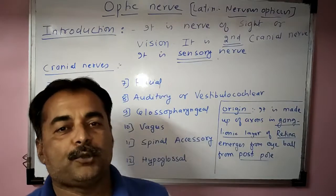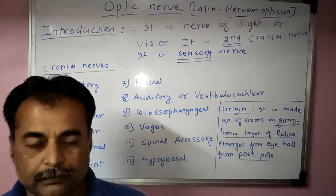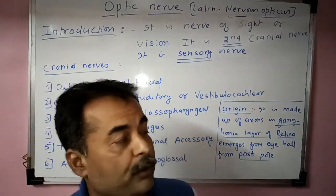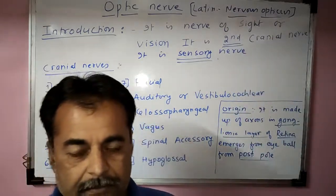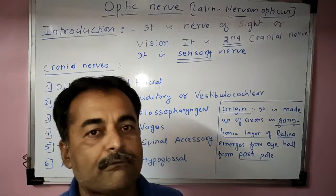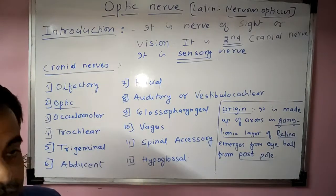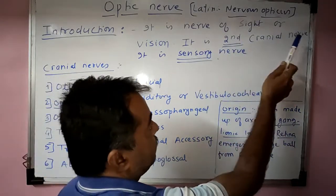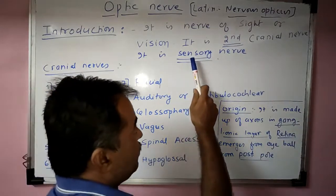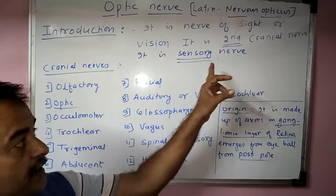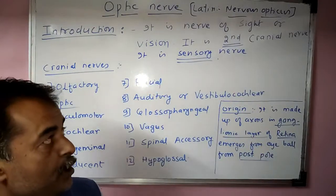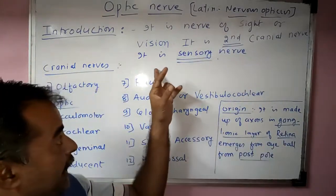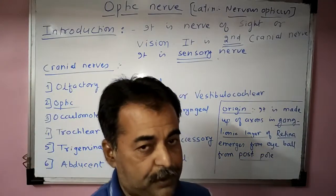Hello everyone, our today's topic is Optic Nerve. In Latin it is also called as Nervus Opticus. This optic nerve is a nerve of sight or vision. It is the second cranial nerve and it is purely sensory in nature, responsible for vision.